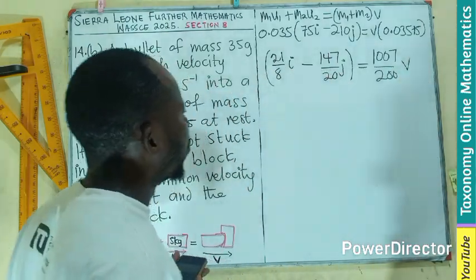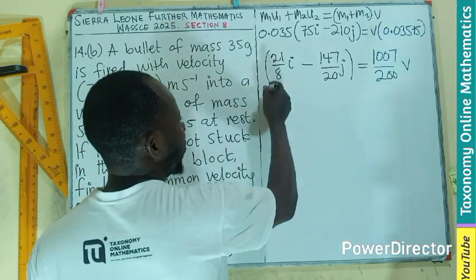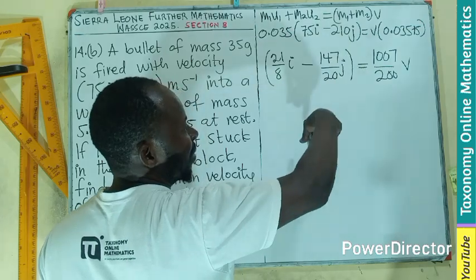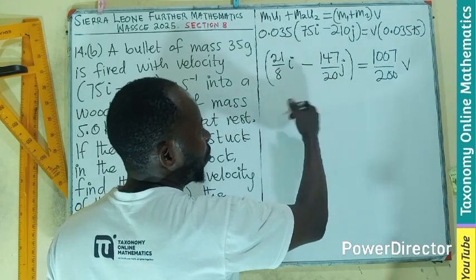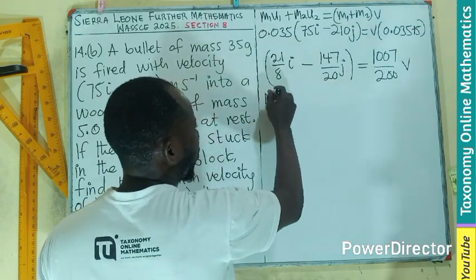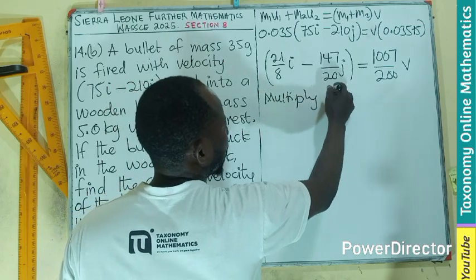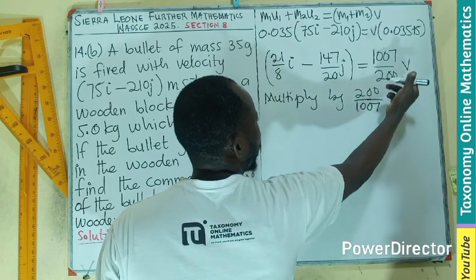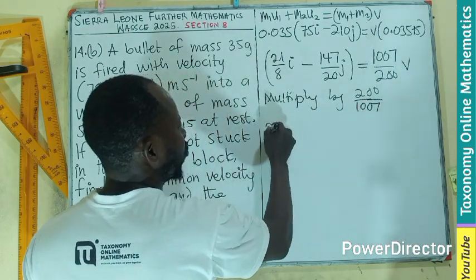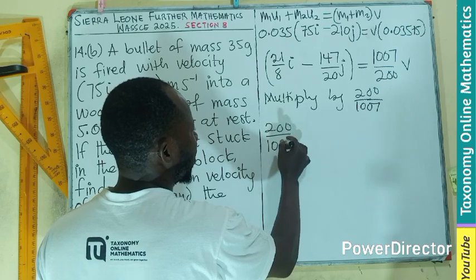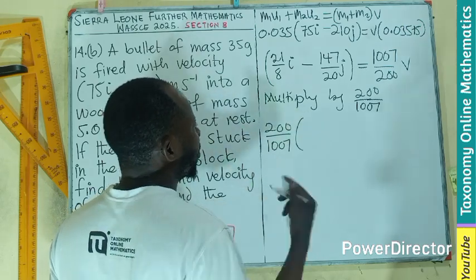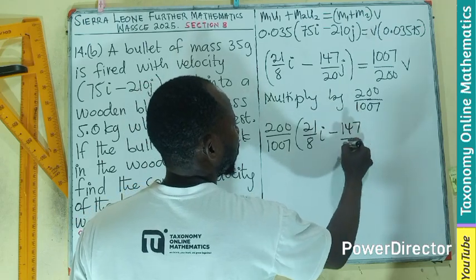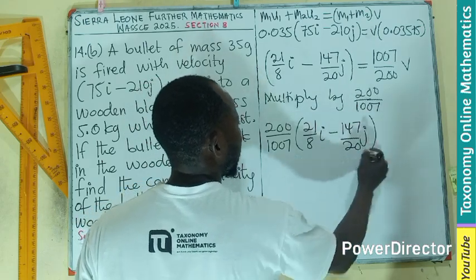Now we divide both sides. We multiply both sides by 200 over 1007 to isolate V. So V equals 200/1007 multiplied by 21/8 i minus 147/20 j.